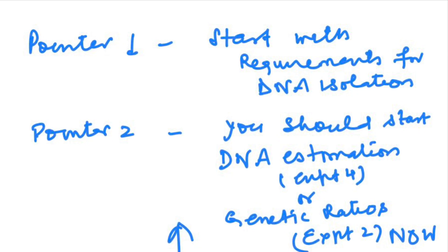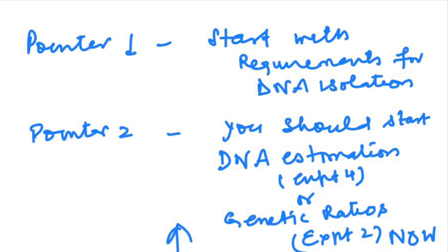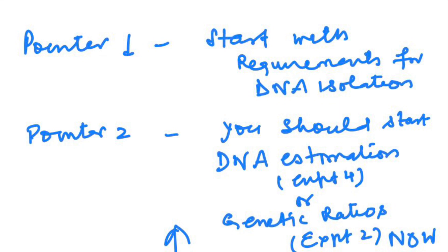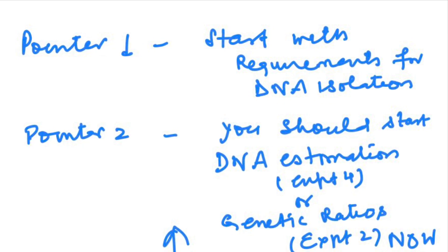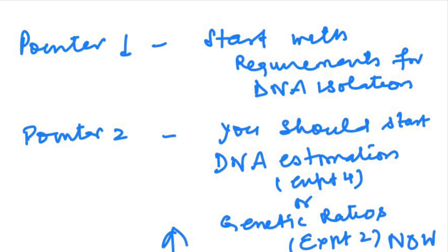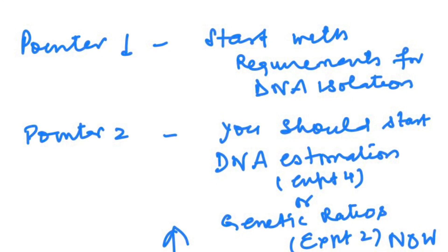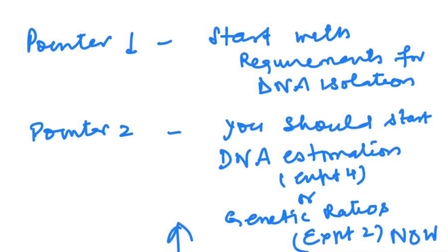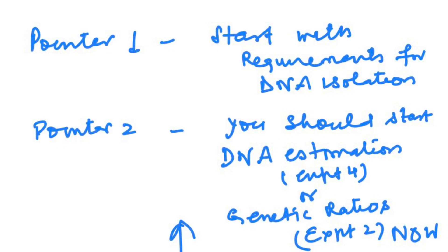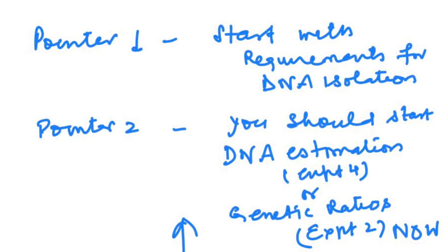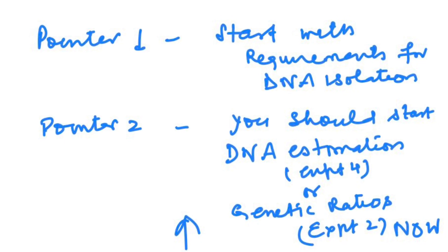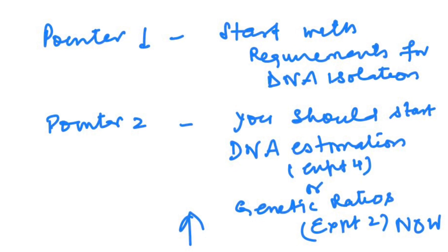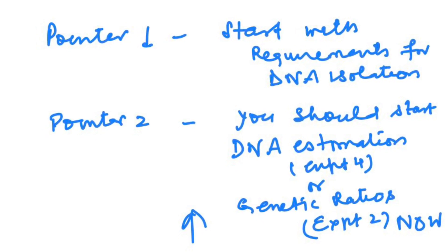In the meantime while you get your requirements, you can try question number four, which is use the given data to plot the standard curve for DNA estimation. Please notice here you will be given four DNA concentrations on the basis of which you will draw the curve, and then you will have one sample concentration absorbance given to you. Gradually it is converted to a theoretical experiment - you just have to plot that concentration and give us the answer for the sample. This experiment you will be very easily able to do while you are getting your requirements.